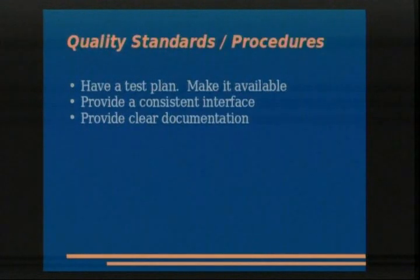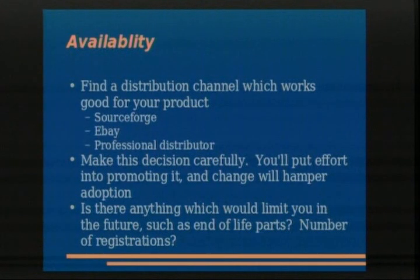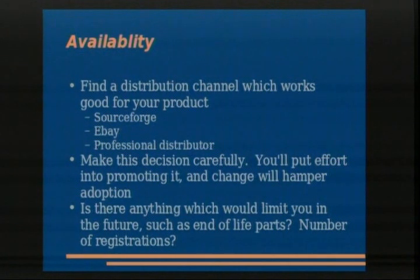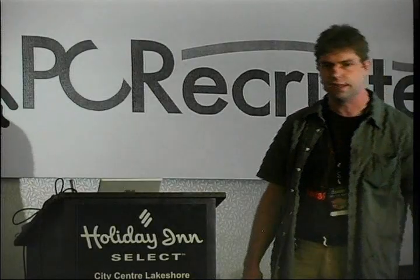Quality standards and procedures: if you can show that you have an eye on quality, that will make people more confident. Availability - find a good distribution channel that works for your product. Something like SourceForge is great for software. If it's something that has to be sent through the mail, eBay is good but is declining in popularity - you have to learn about optimizing for searches. Professional distributors can also be useful but they're going to want money.